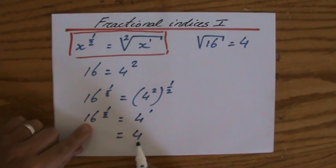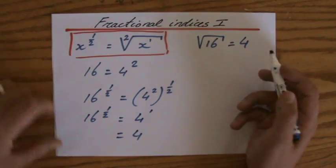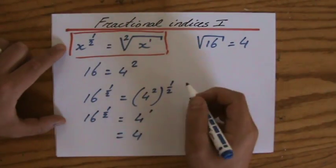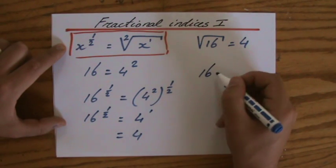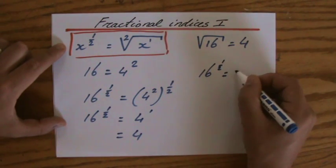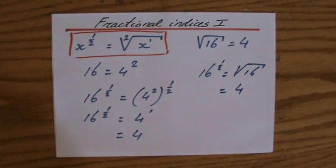2 times a half, and that is 4. So 16 to the power of a half is 4. The square root of 16 equals 4. All right. So this just proved that 16 to the power of a half is the same as the square root of 16, which is the same as 4.